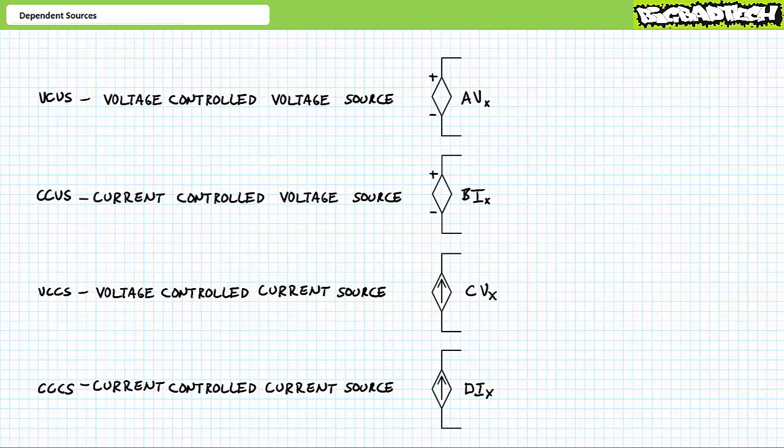Dependent sources are often depicted schematically using a diamond. A dependent voltage source is a diamond with positive and negative polarity markers. A dependent current source is a diamond with an arrow indicating the direction of conventional current. Often, the output of a dependent source depends on some controlling voltage or current signal in another system or within the same system, allowing for four different varieties of dependent sources.